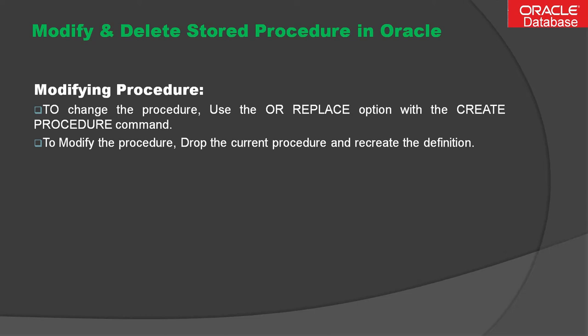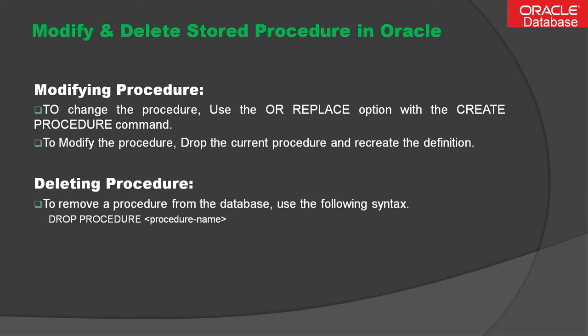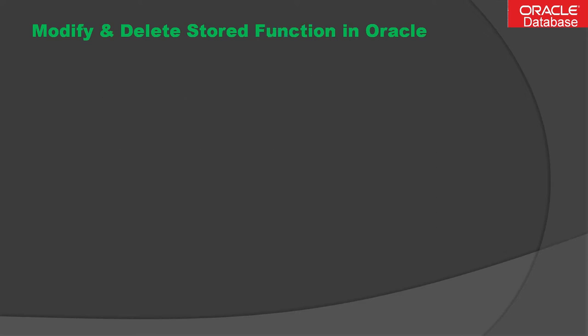So modifying means you have to first drop the existing procedure and then recreate it. Now, to remove or delete a procedure from the database, you use the command DROP PROCEDURE followed by the procedure name — pretty simple.